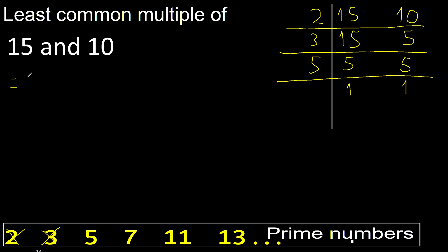Here, multiply. 2 multiplied by 3 is 6. 6 multiplied by 5 is 30.